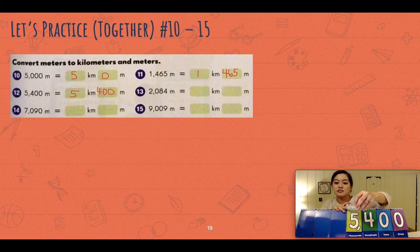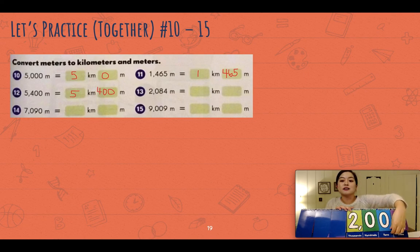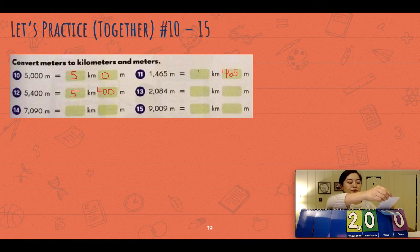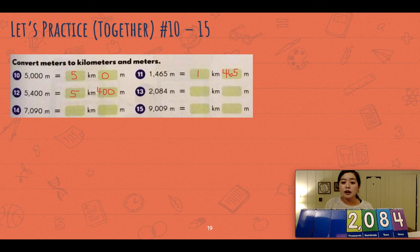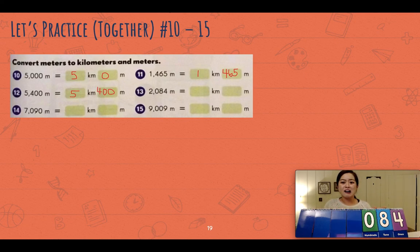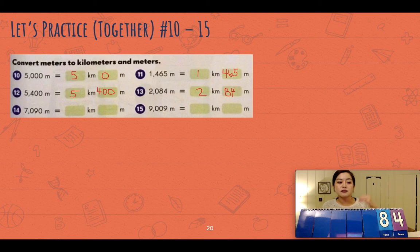Let's try number thirteen: two thousand eighty-four. Are you seeing a pattern? Is this getting easier? Two thousand eighty-four — how many thousands are there? Two thousand, so that's two kilometers. What are the leftover meters? Just 84, because there's a zero in the hundreds place. The answer to number thirteen is two kilometers and 84 meters.